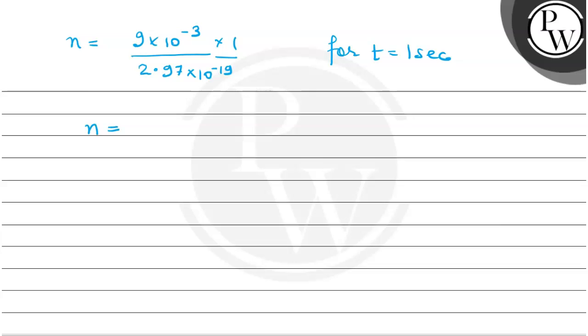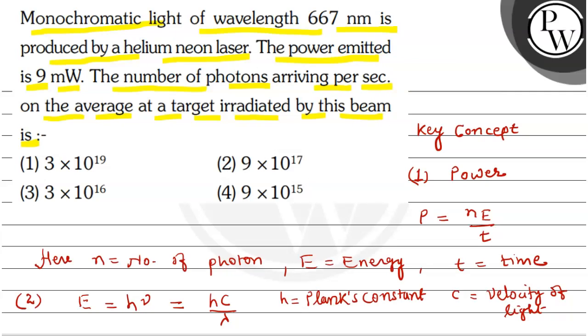n is equals to 3 into 10 to the power 16 photons. This number of photons per second is being produced in one second. This is my calculated value.